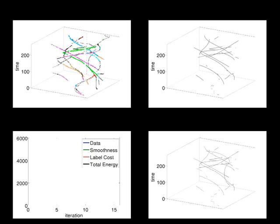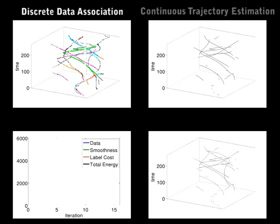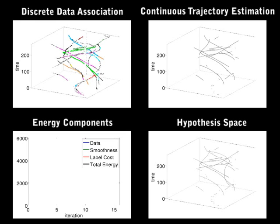Here, we show the optimization process in more detail, where you see for each iteration the discrete relabeling step, the continuous trajectory estimation of the currently active models, the set of all possible trajectory hypotheses, and the individual components of the energy.